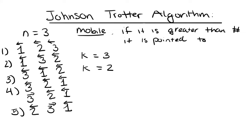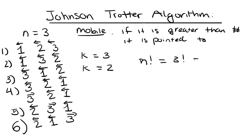Permutation 6 gives us 2, 3, 1. Checking mobile numbers: 1 points to 3, not mobile; 3 points to 1, so 3 is mobile; 2 points to nothing, not mobile. We switch 3, giving us 2, 1, 3. Checking again: 2 points to nothing, 1 points to 2 — not mobile, 3 points to nothing — not mobile. No mobile numbers remain, so we're done. We've generated 6 permutations, which equals 3! = 3 × 2 × 1 = 6. That's the Johnson-Trotter algorithm.